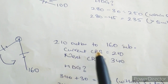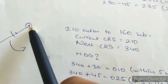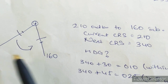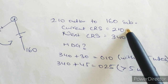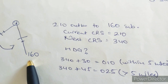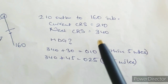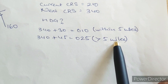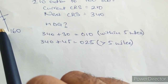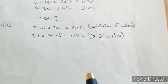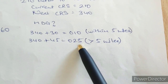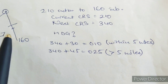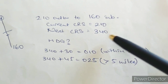Another outbound to inbound example: outbound on radial 210 wanting to go inbound on radial 160. You will turn left. Your current course is 210 and the next course is 340 — the opposite of 160. Since you are turning left, the heading correction is towards the right — add to the new course. So: 340 plus 30 gives heading 010 within 5 miles, or 340 plus 45 gives heading 025 beyond 5 miles. Follow that heading to intercept radial 160 inbound, then get back on track with course 340.